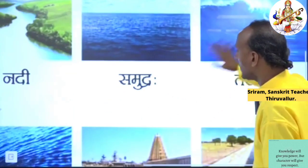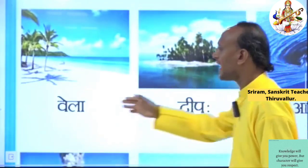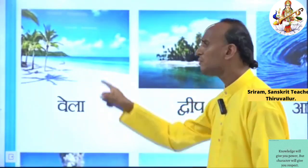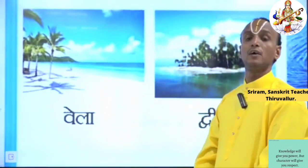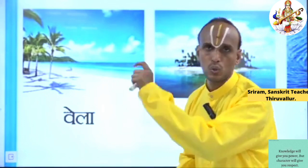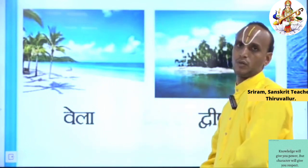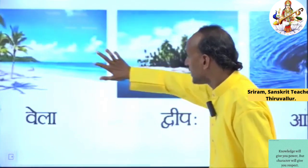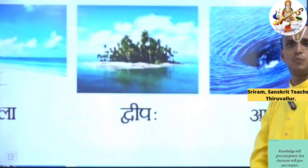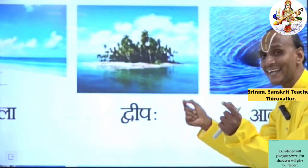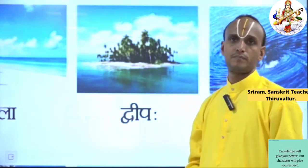Now I will teach you the third line. The first one — Vela. What is meant by Vela? You can see the picture, right? Vela means Seashore. In Tamil we say Kadarkarai. Then the next one — Dvipaha. What is meant by Dvipaha? Dvipaha means Island. In Tamil we say Teev.